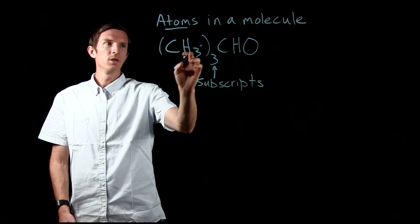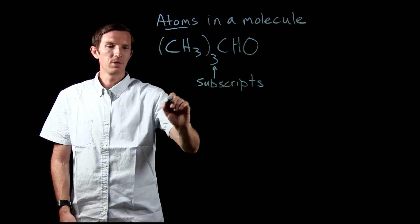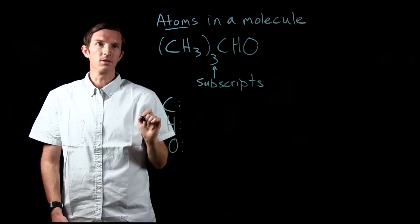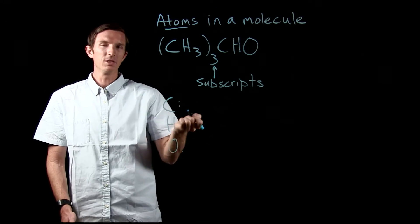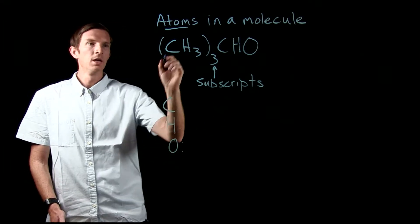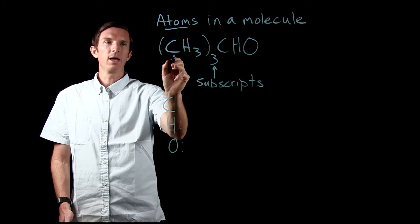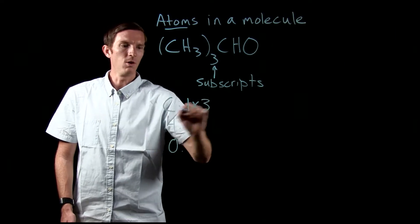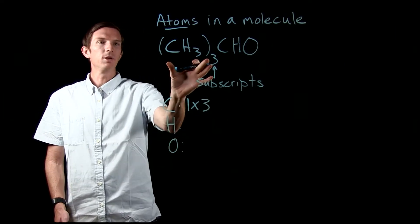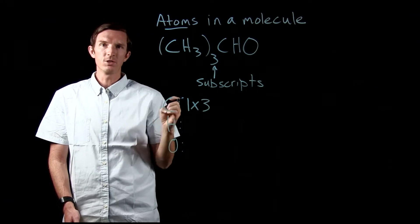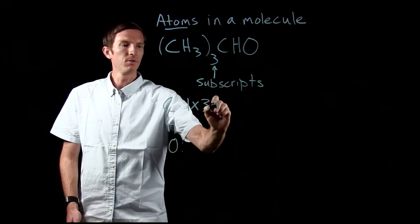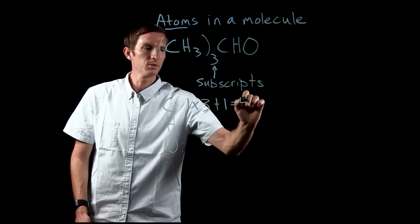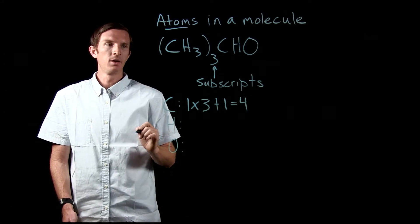We're going to look at the number of carbon, hydrogen, and oxygen atoms in this molecule. This is going to get really important when we get into balancing reactions. We see we have one carbon atom inside the parentheses, so we multiply by three because we have three of this CH3 portion of our molecule. We also have one carbon atom outside, so we add that one — giving us a total of four carbon atoms.